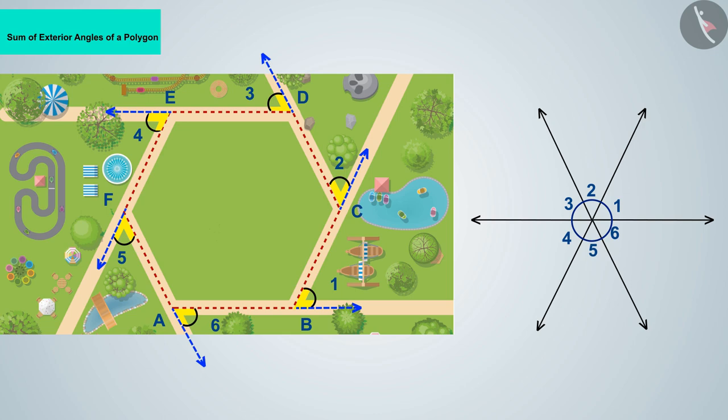In this way you can complete one round by walking outside the garden. When you do this, you see that when connecting the angles formed to complete a round of the garden, they represent a circle. And we know that the total measure of the angles formed at the center of the circle is 360 degrees.